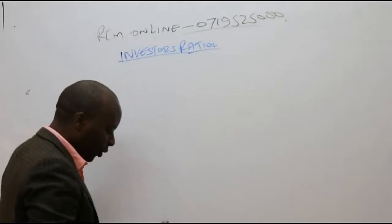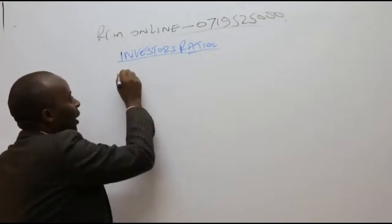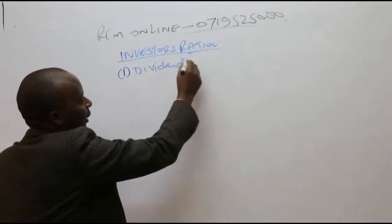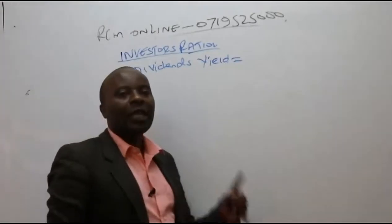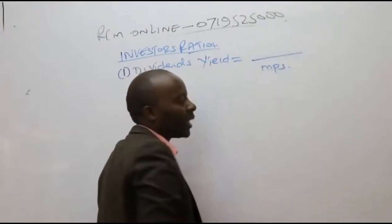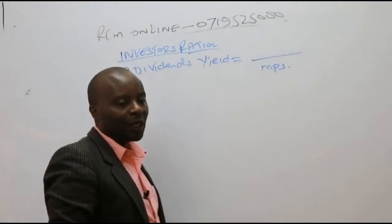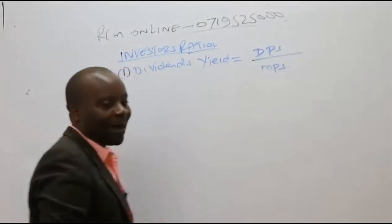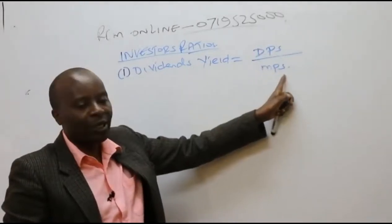In the investors ratios, investors are interested in dividends. So it will be very important for us, number one, to calculate what we call the dividend yield. Any yield must always have market price per share in the denominator. So dividend yield will be dividends per share all over market price per share.